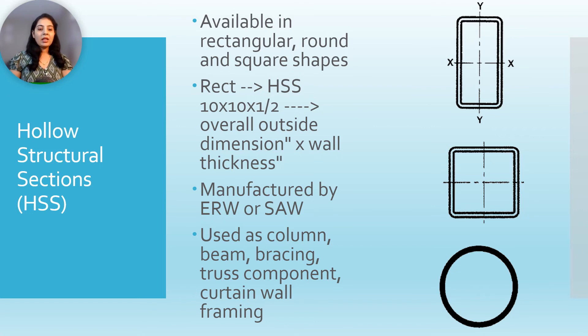They are designated as rectangular HSS 10 by 10 by 1/2 - that means this 10 by 10 is overall outside dimension in inches and wall thickness in inches. They are used as column, beam, bracing, truss component, curtain wall framing, etc.